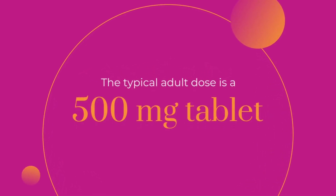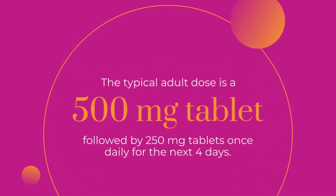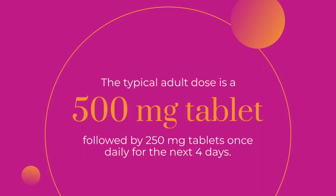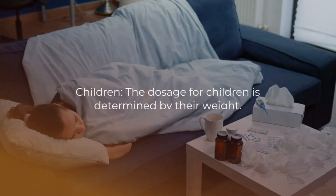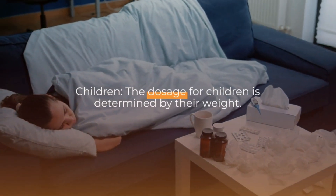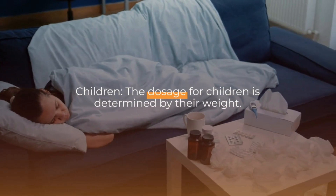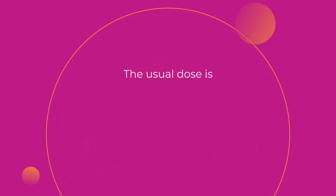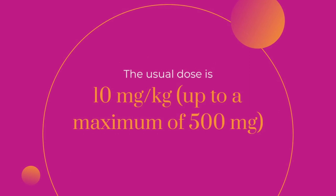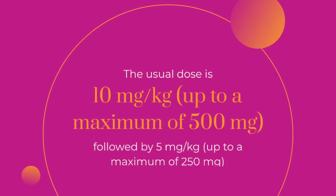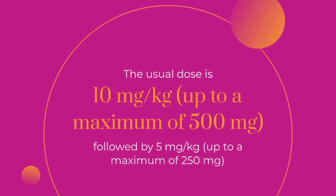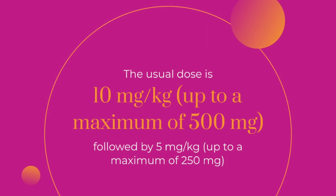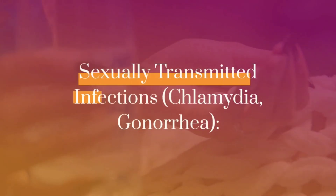For respiratory infections in adults, the 500 mg first-day dose is followed by 250 mg tablets once daily for the next four days. For children, the dosage is determined by weight: the usual dose is 10 mg per kg, up to a maximum of 500 mg on the first day, followed by 5 mg per kg, up to a maximum of 250 mg once daily for the next four days.